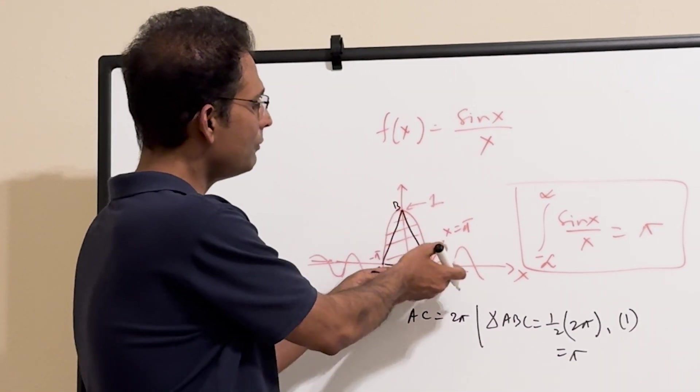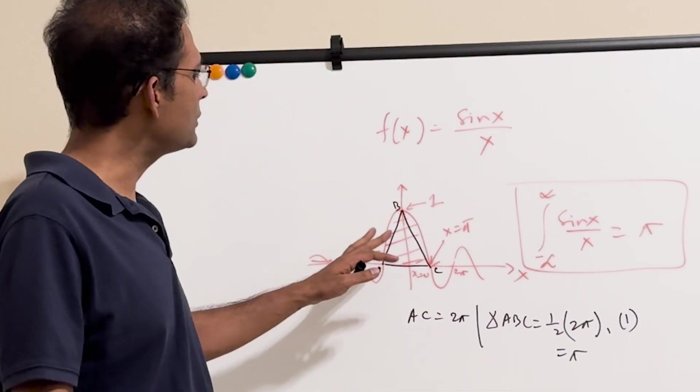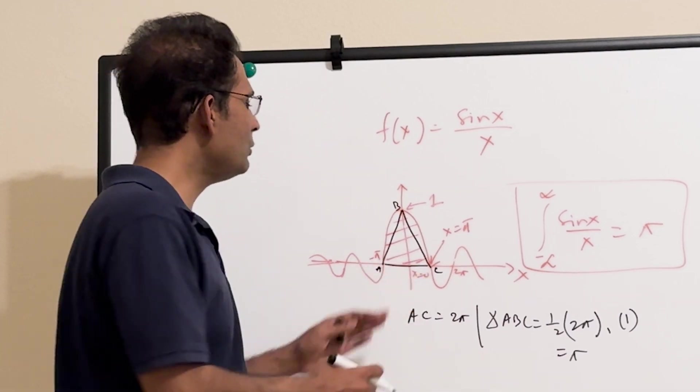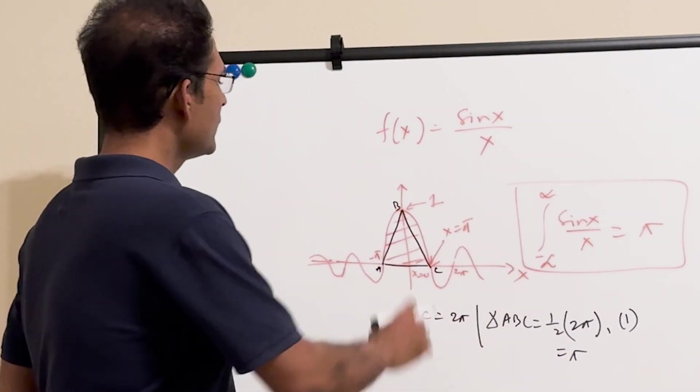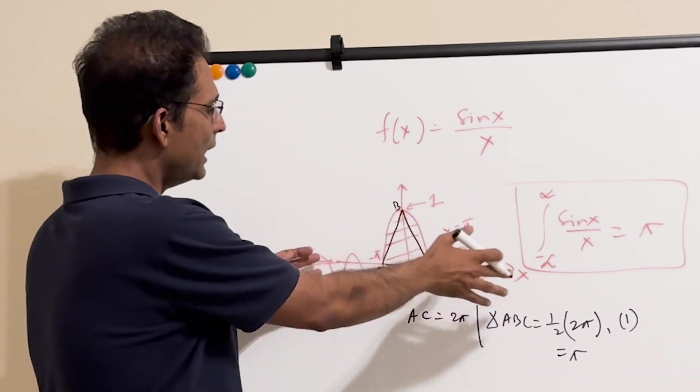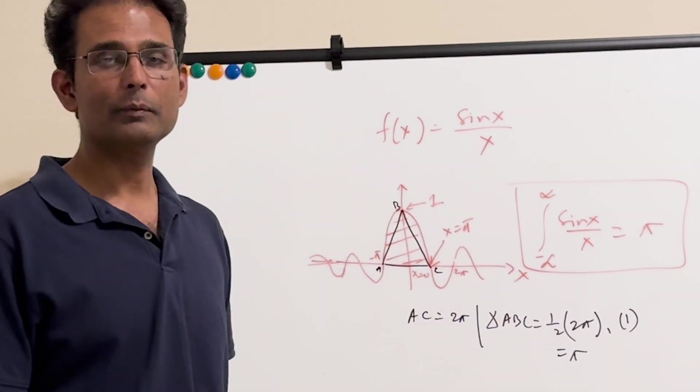...and then you'll have a negative number added to that, and then positive again and so on. Again, it is oscillatory, but you can have this area to be pi. So what happens is that for this function, when you add all the areas, then what you get is just the area of this triangle.